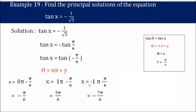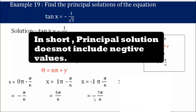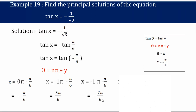For n = −1: x = −π + (−π/6) = −7π/6. Since π/6 is 30°, 7×30 = 210°, but with a negative sign this is less than 0°. Therefore this is not a valid solution.